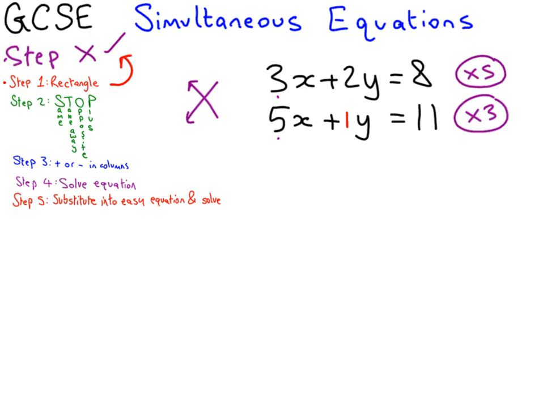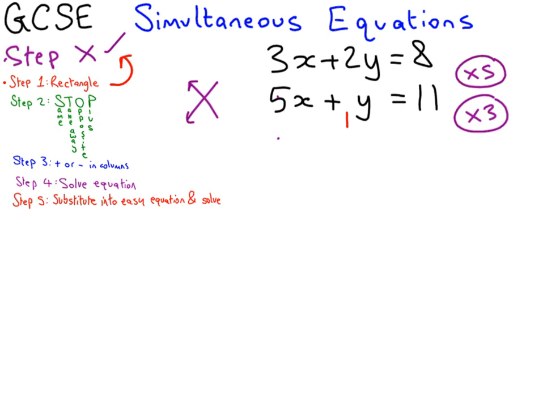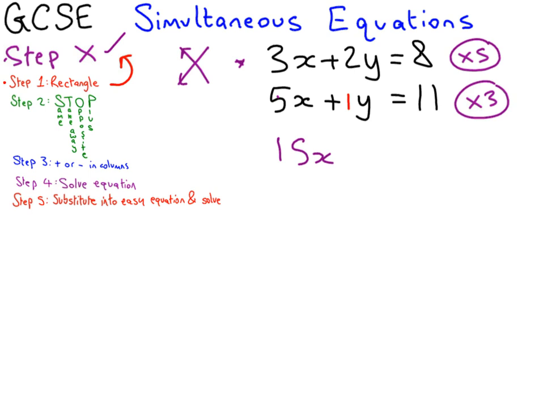Now if we actually do that step and multiply through, we're going to write the equations again underneath. So the first equation multiplied by 5, and you have to multiply the whole thing by 5, we are going to get 15x, 3x times 5, plus 10y, 2y times 5 is definitely 10y, equals 8 times 5, 40. And our second equation, 5x times 3, 15x, 1y times 3, 3y, 11 times 3, 33. So now we've done step X and we move on to the rectangle step.